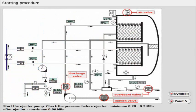Check the pressure before ejector, minimum 0.28 to 0.3 MPa. After ejector, maximum 0.06 MPa.